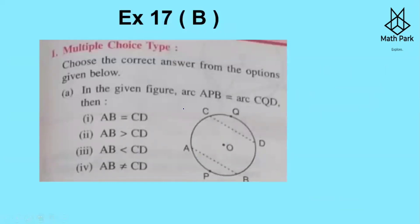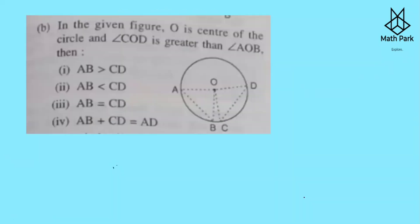Now Exercise 17B, Question 1. In the given figure, arc RAPB equals arc CQD. If two arcs are equal, the chords they subtend are equal — equal arcs subtend equal angles. Therefore AB = CD is the correct option.